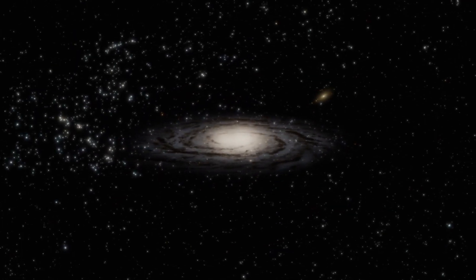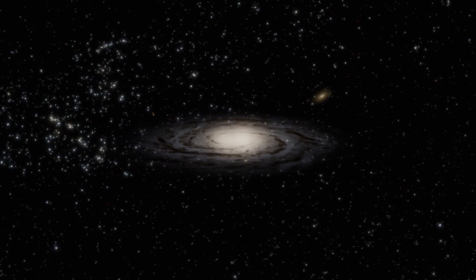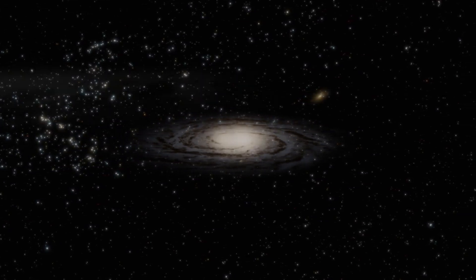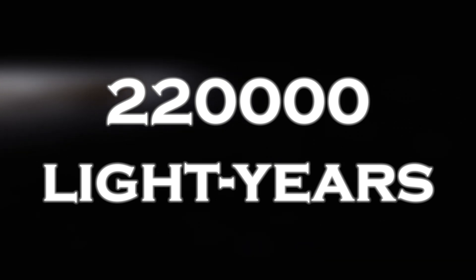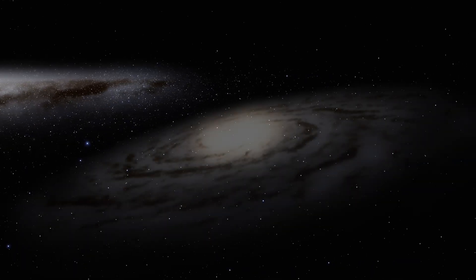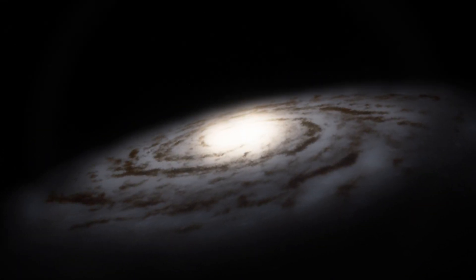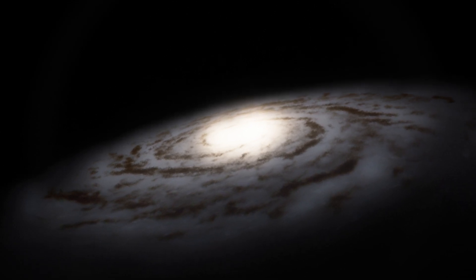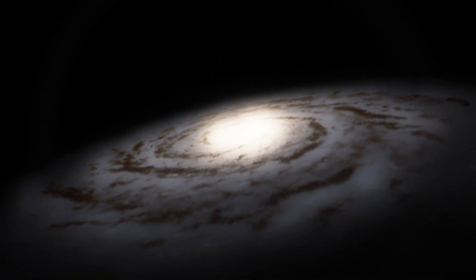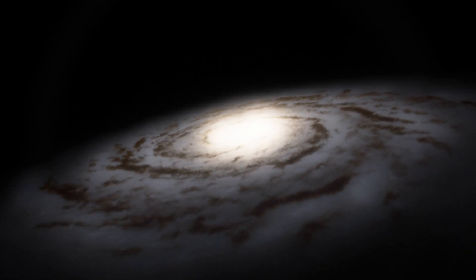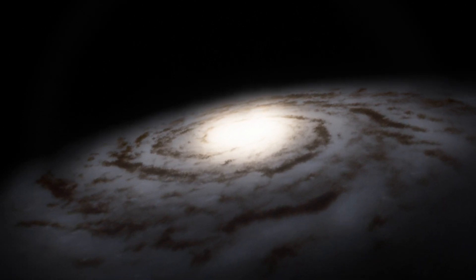Andromeda stands out for its unique characteristics that distinguish it from other galaxies in the universe. With an estimated diameter of around 220,000 light years, it is positioned as one of the largest galaxies in the local group, surpassing even the Milky Way galaxy. This immense scale contributes to its mass, which is estimated at one trillion stars, thus outnumbering our own galaxy.